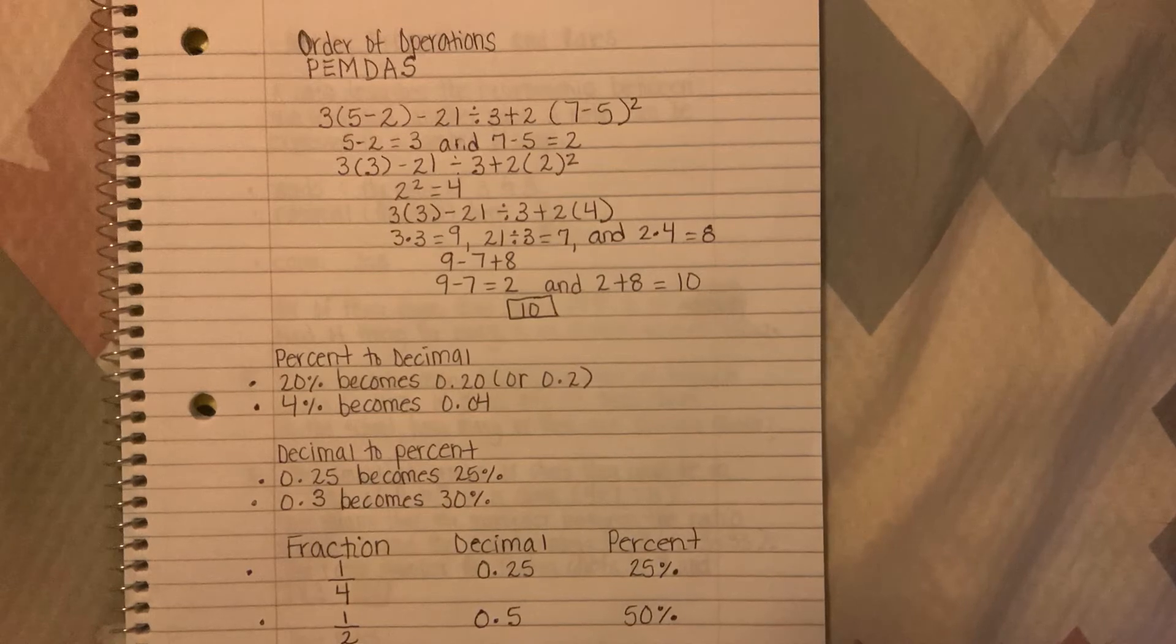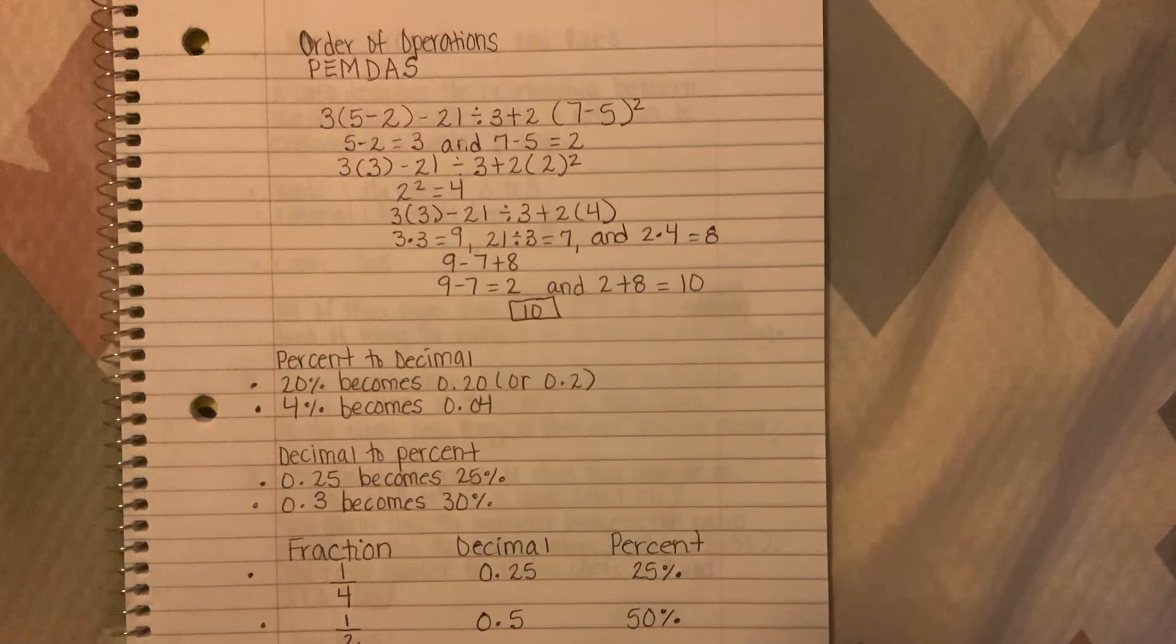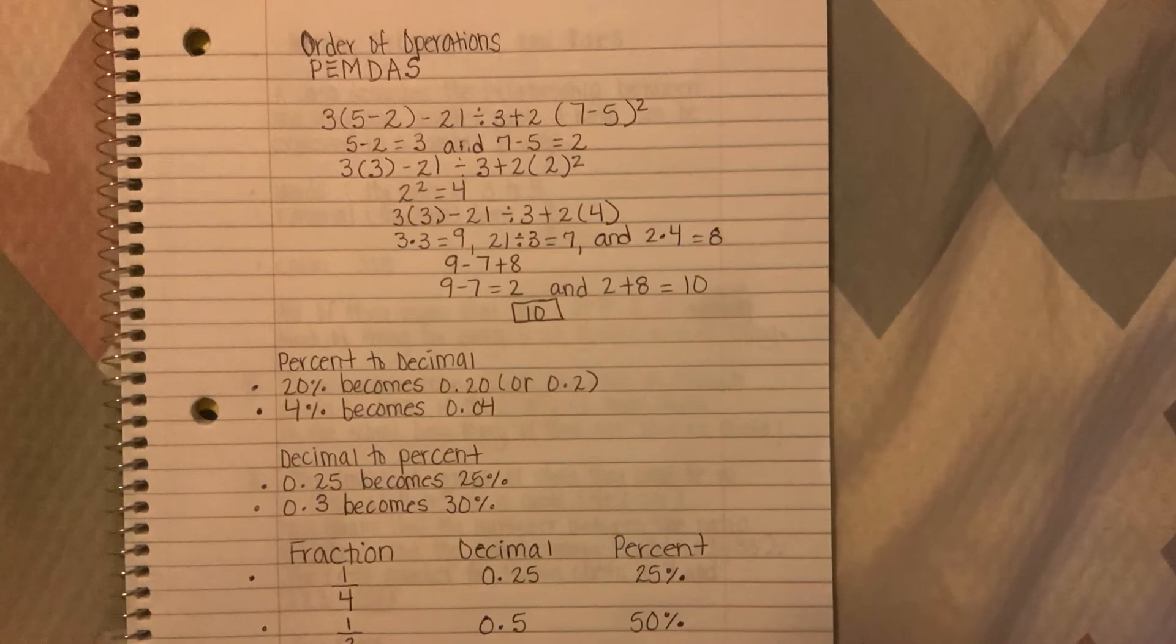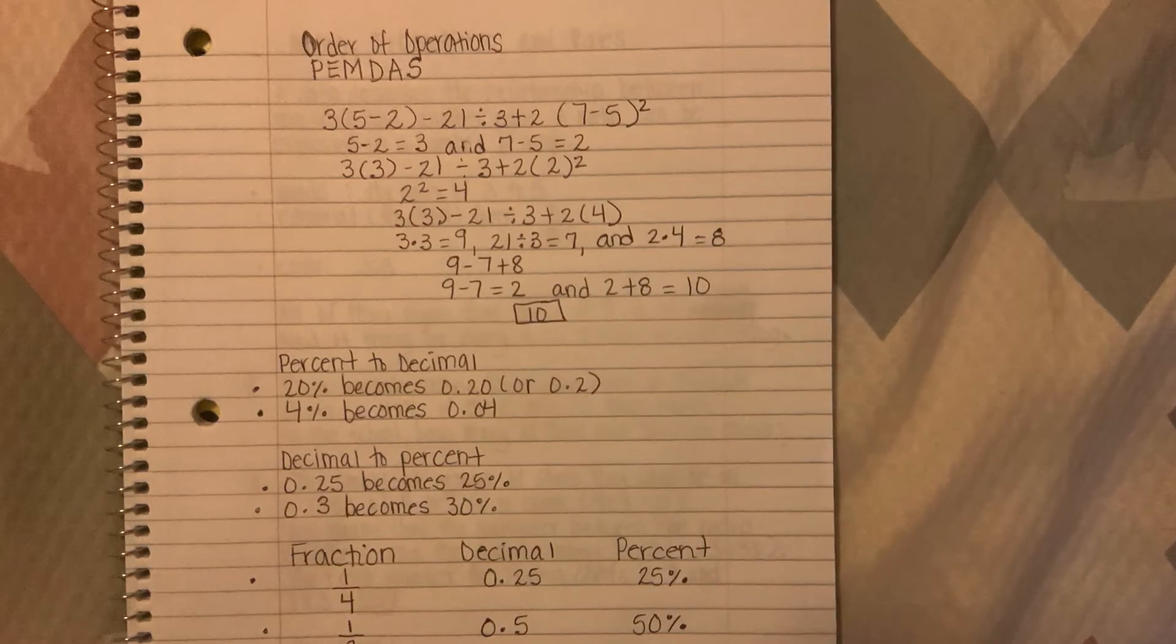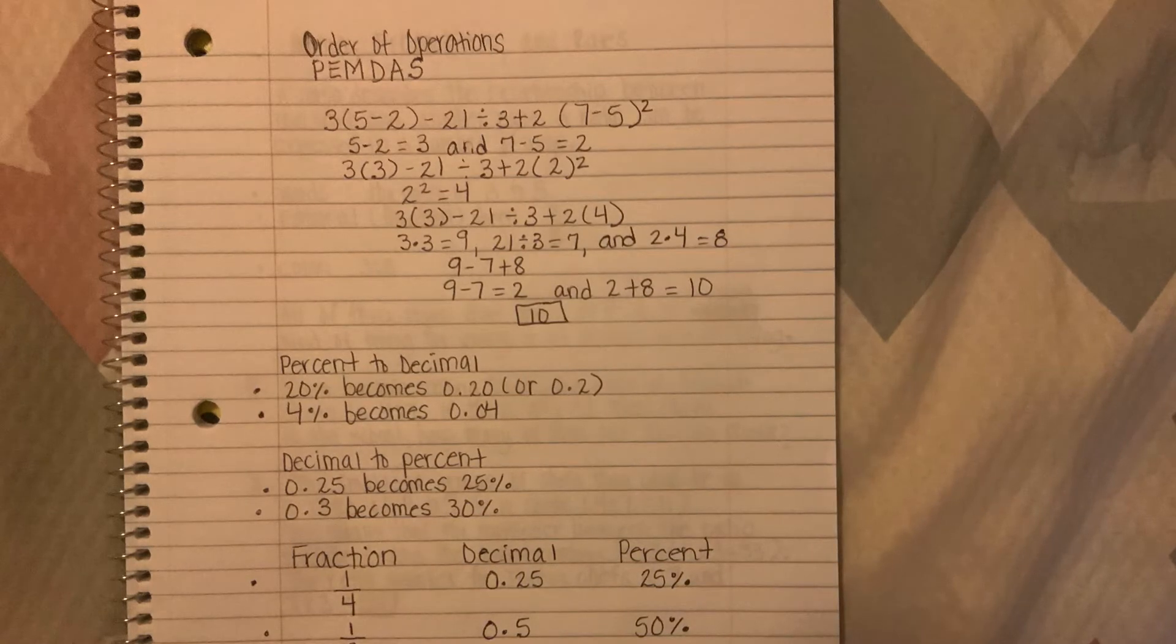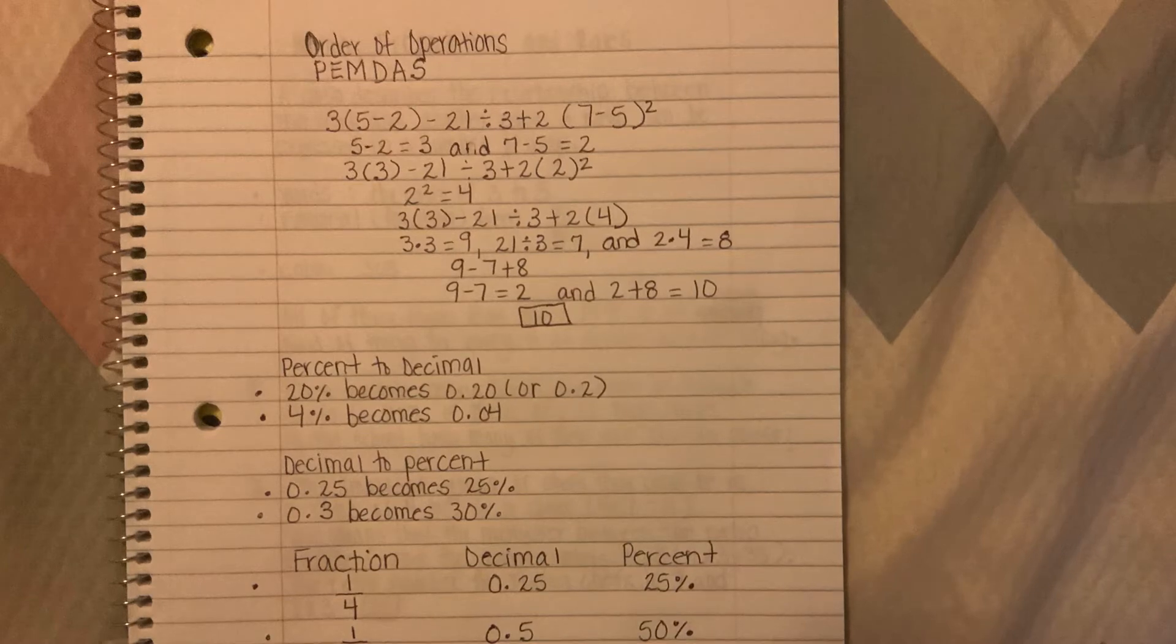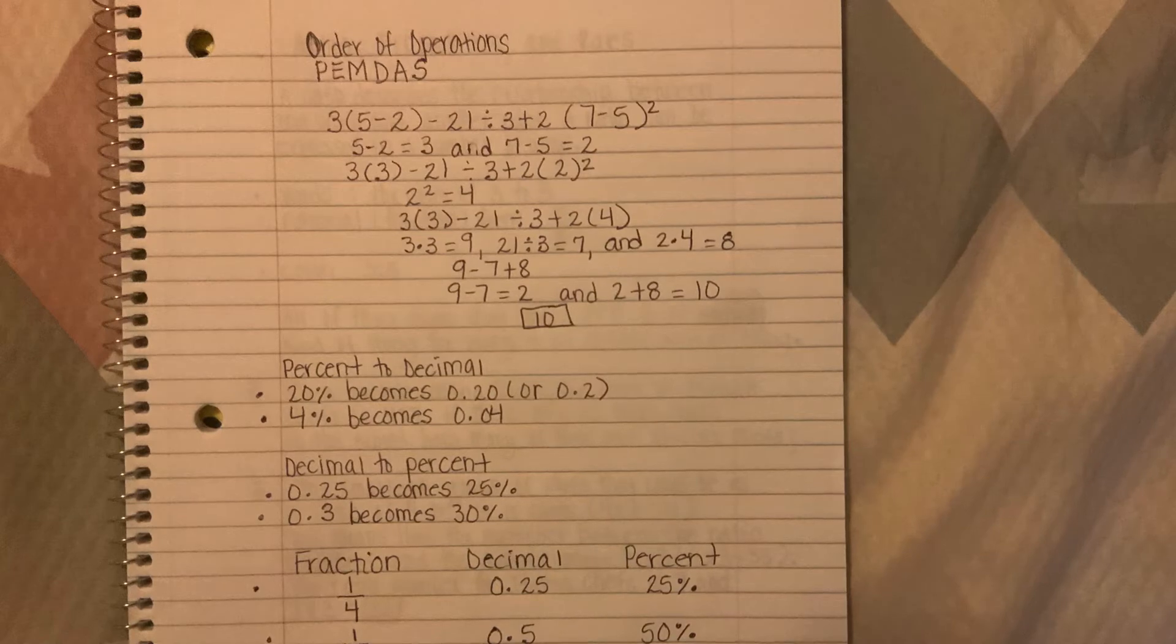Let's get into percents to decimal. Changing percents to decimal, for example 20% becomes 0.20 or 0.2, 4% becomes 0.04. You are provided a calculator so you don't have to worry about working too hard. Decimal to percent: 0.25 becomes 25% because you move that decimal over, 0.3 becomes 30%.